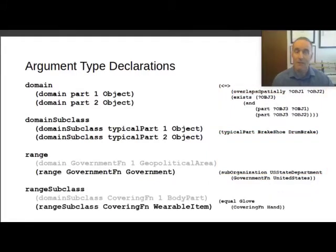And in the same way that we have for domain and domain subclass, we have range and range subclass. So if we want to talk about the return type or the denotation of a function being a class, then we use the relationship range subclass. So we can say that the range subclass of covering function is a wearable item. And in the case of a glove, a glove is the covering function of the hand. So the class of things that is clothing that covers your hand, that's known as a glove.